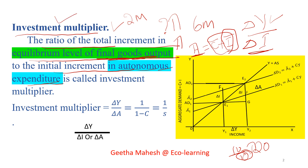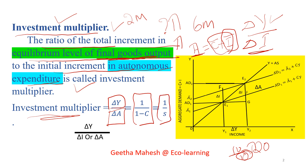The meaning formula for the investment multiplier is: delta Y divided by delta K. We calculate it as 1 divided by (1 minus C), which represents the multiplier, or equivalently 1 divided by S. So K is equal to 1 divided by (1 minus C).